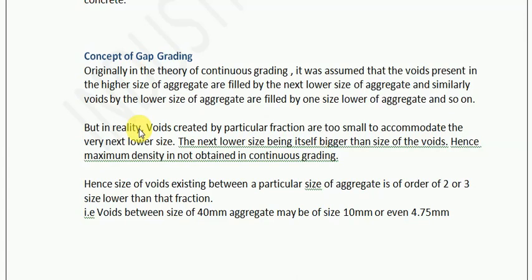Then to fill the voids of 8mm aggregate, instead of using 6mm aggregate, we will use 2mm aggregate. So in this way, we will provide the aggregate which is used for filling the voids between the aggregate of much smaller size. Hence, the size of voids existing between a particular size of aggregate is of the order 2-3 sizes lower than that fraction. That is, voids between size of 40mm aggregate may be of size 10mm or even 4.75mm.